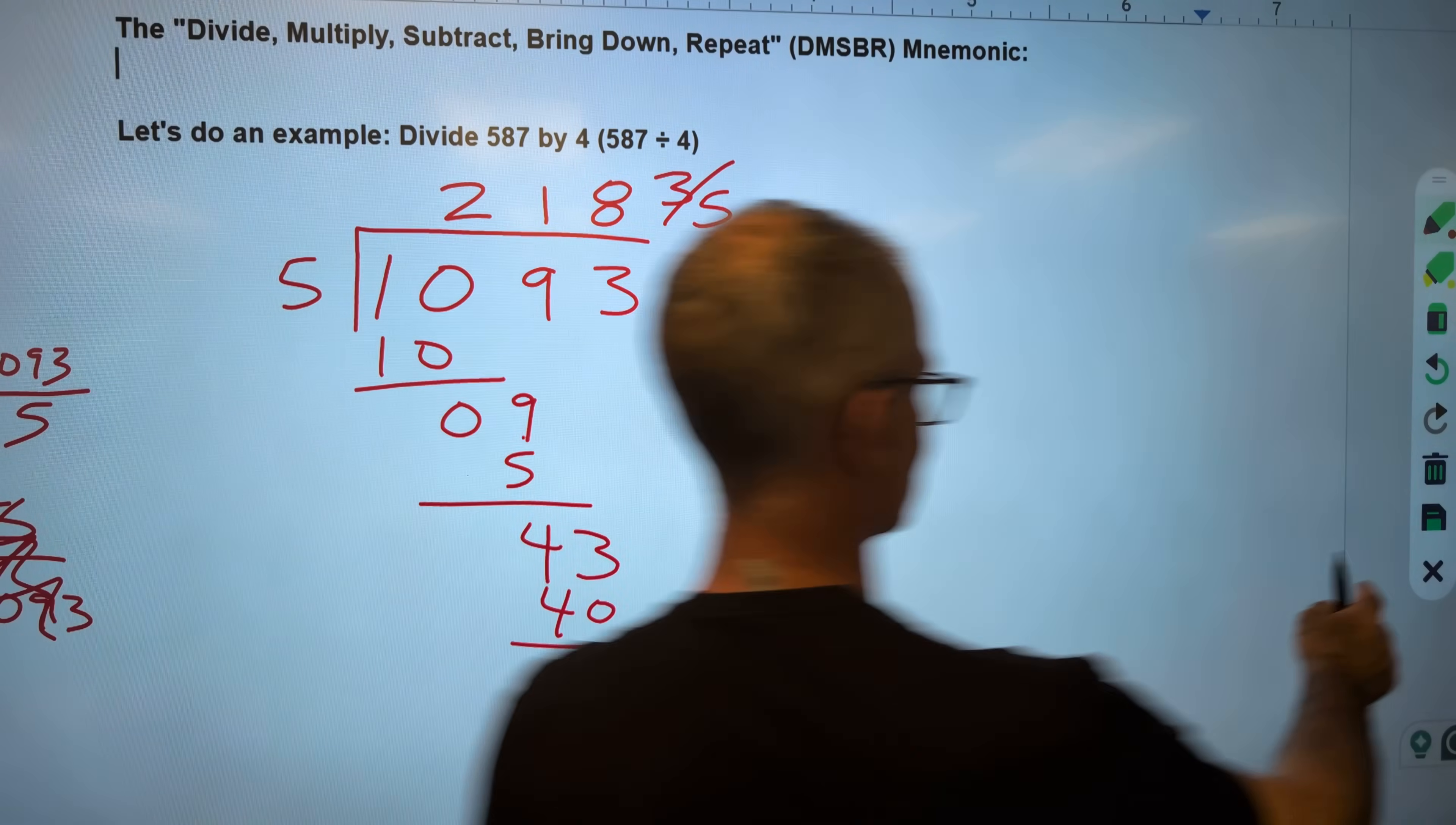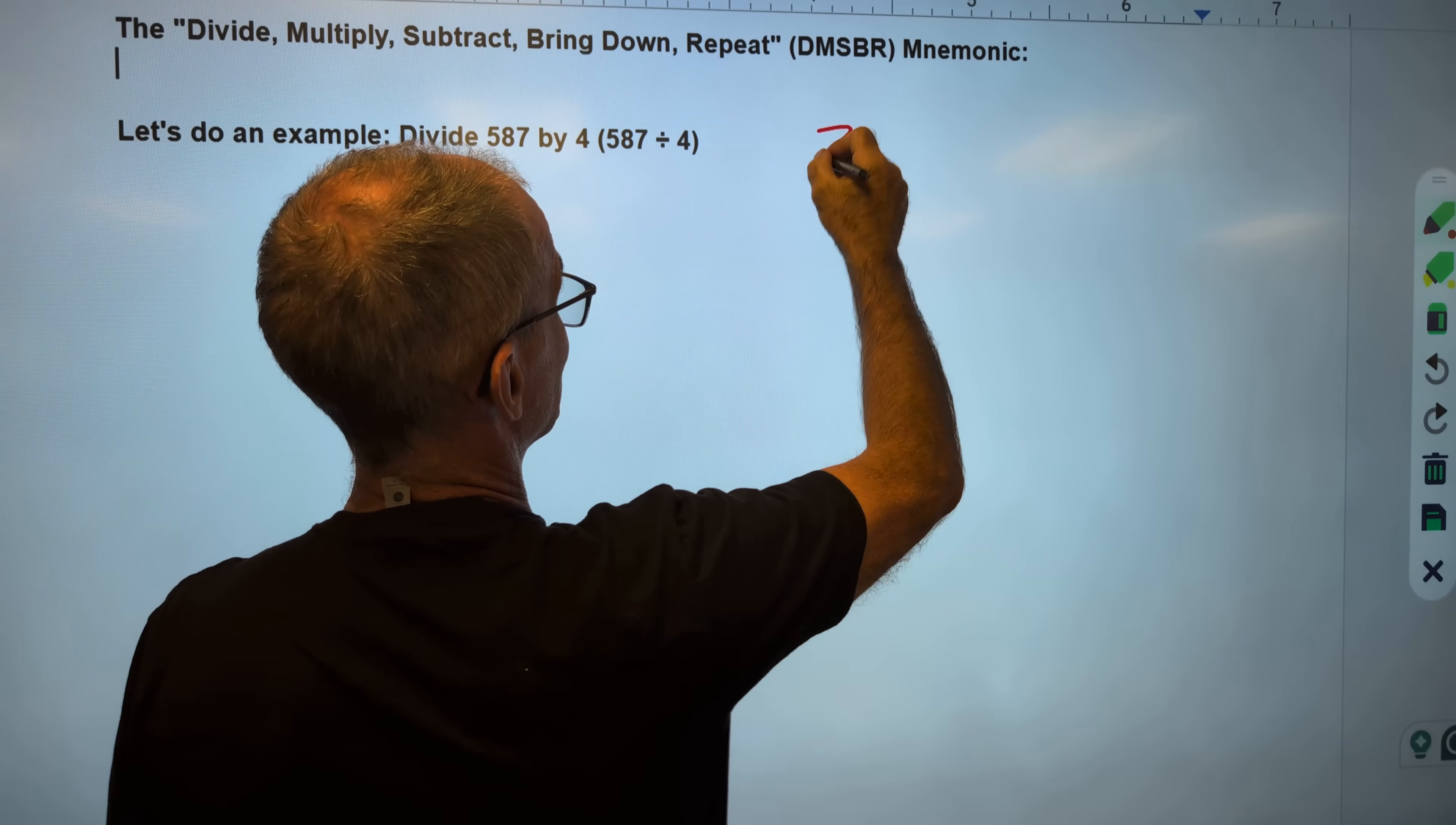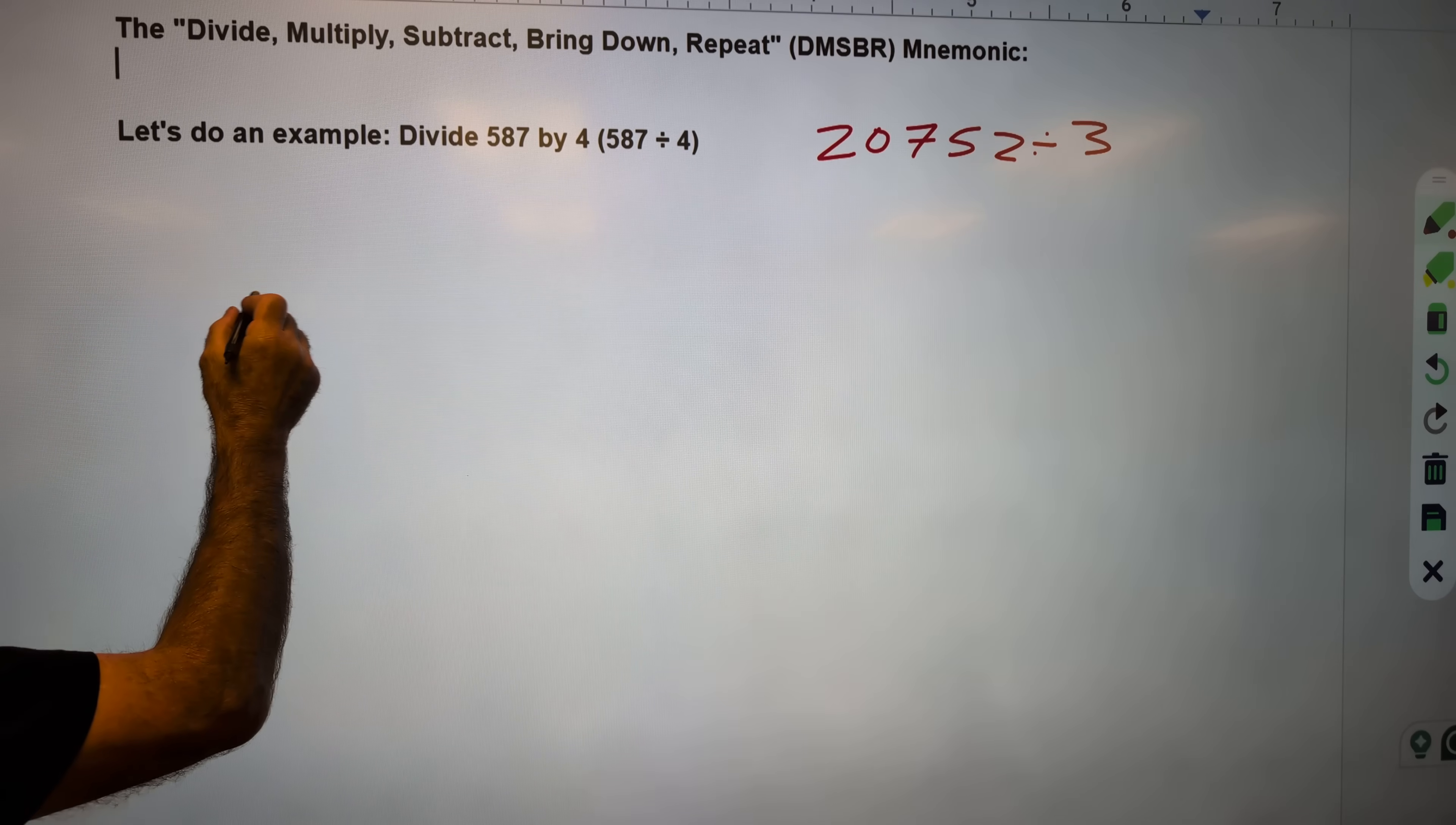Okay, let me do one more problem here. Again, I would pause the video. Make sure you're doing a problem before I do it. Unpause. Watch how I do it. Let's say I have, I don't know, 20,752 divided by 30. Okay? So again, that fraction is going to look like 20,752 over 3. It falls over that way.